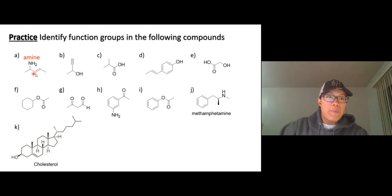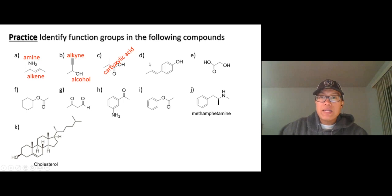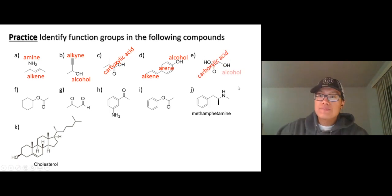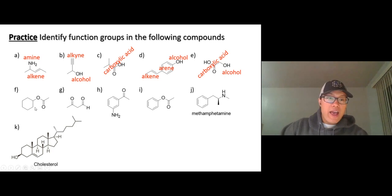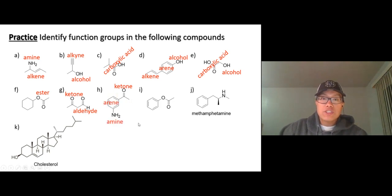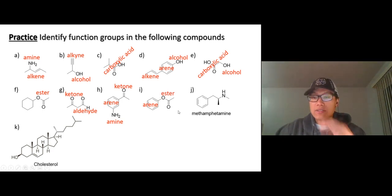In compound A, we have an amine, a double bond (alkene), and an alcohol. In B, a triple bond — alkyne — and an alcohol. In C, a carboxylic acid. In D, a double bond (alkene), an arene, and an alcohol. In E, carboxylic acid (C double bond O with OH) and a separate alcohol, divided by CH2 CH2 in the middle. In F, C double bond O and O — that's an ester. In G, a ketone (C double bond O), and C double bond O with H — that's an aldehyde.